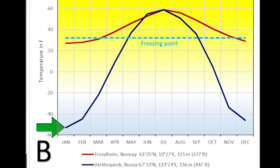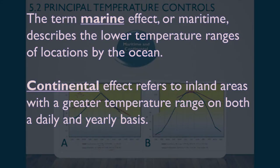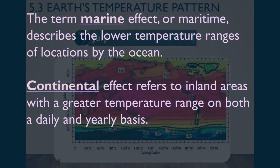That shows an extreme continentality effect. To summarize: cities close to the ocean have a more moderate temperature — a little cooler in the summer and a little warmer in the winter, so the temperature range is small. Cities located in the middle of the continent — like Wichita or Siberia — show a great temperature range, with the difference between summer and winter increased tremendously.